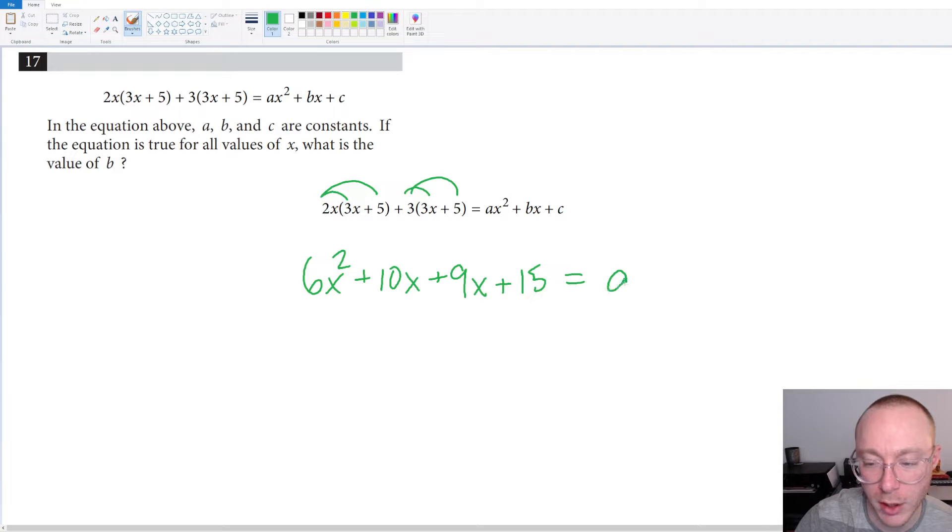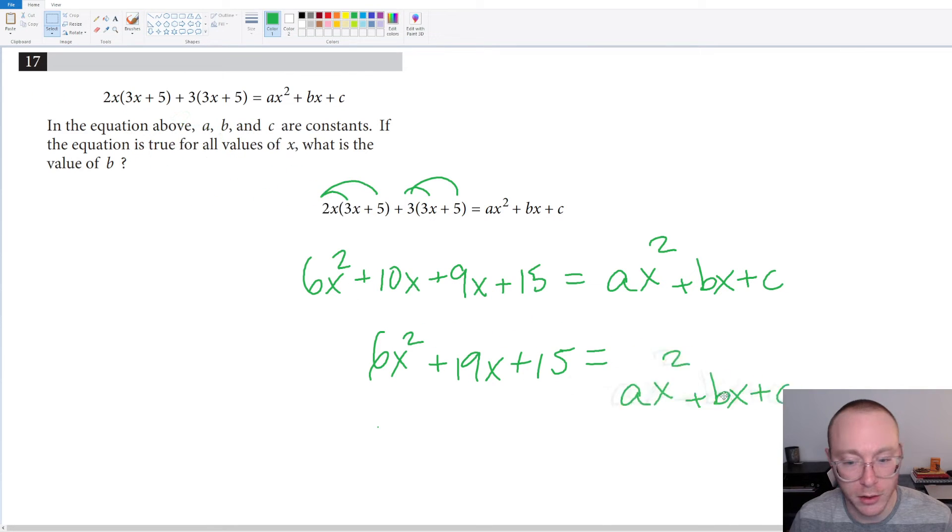And again this is just going to be equal to a blank quadratic. Then we're going to say to ourselves, okay, on the left-hand side we can really just do one more thing, right? We can combine our like terms. And if we were to do that we'll get 6x squared plus 19x plus 15. And here we have it.